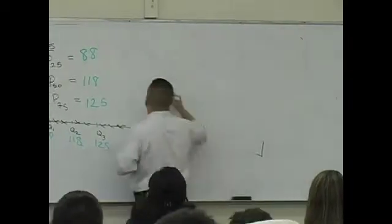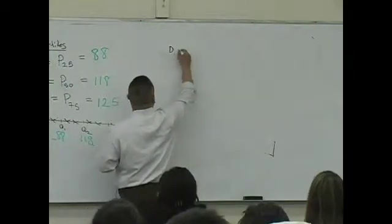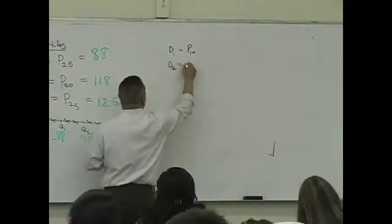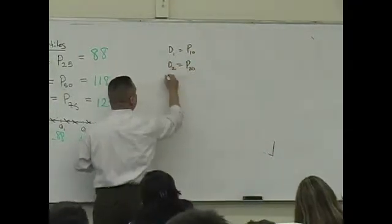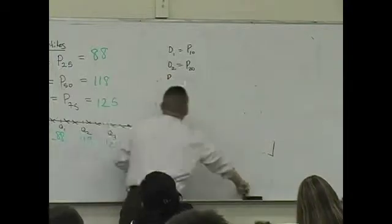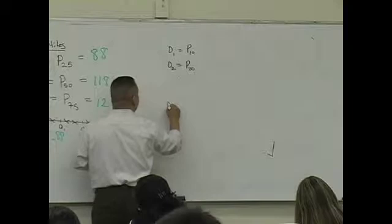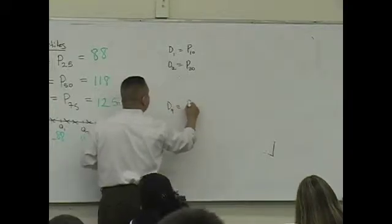For example, the first decile is the 10th percentile. The second decile is the 20th percentile. The third and so on, all the way up to the ninth decile, which is the 90th percentile.